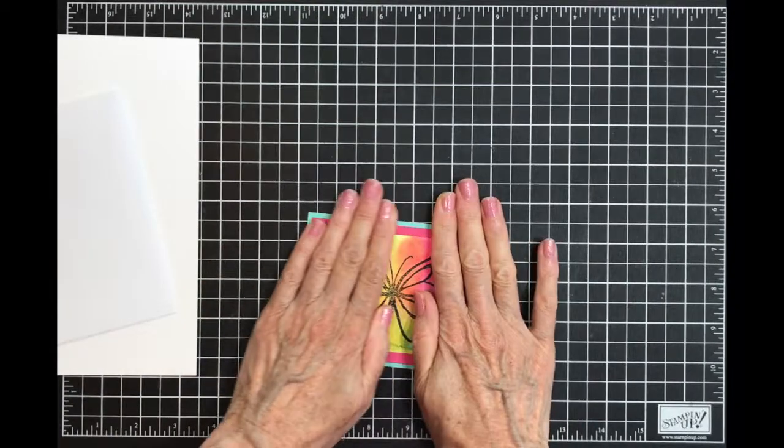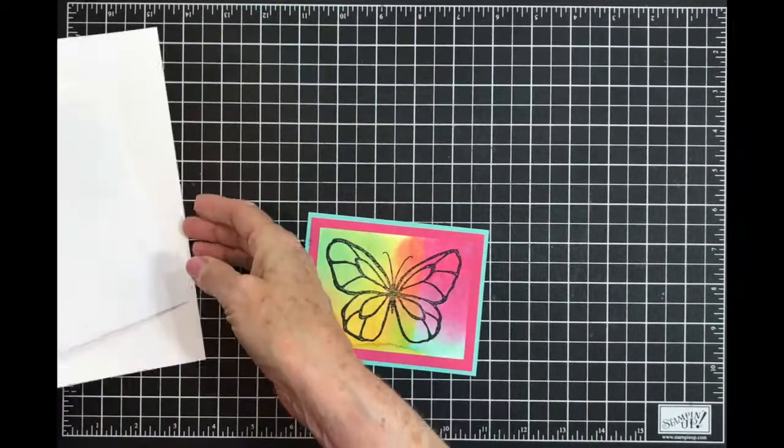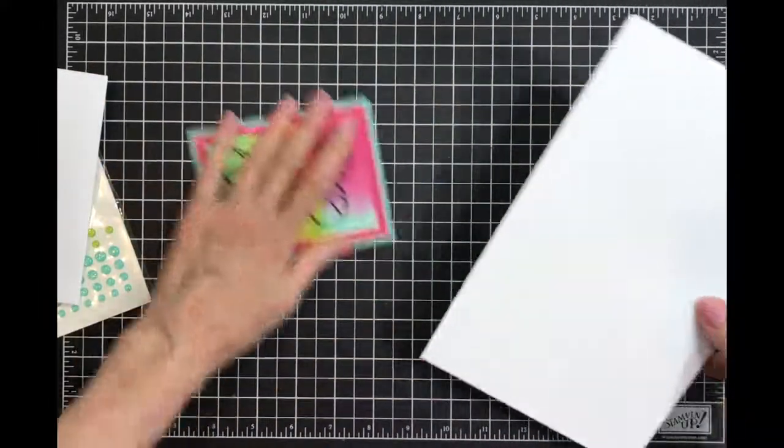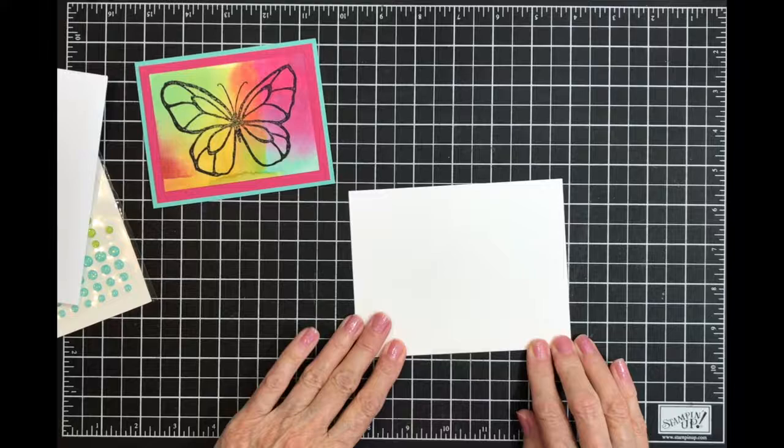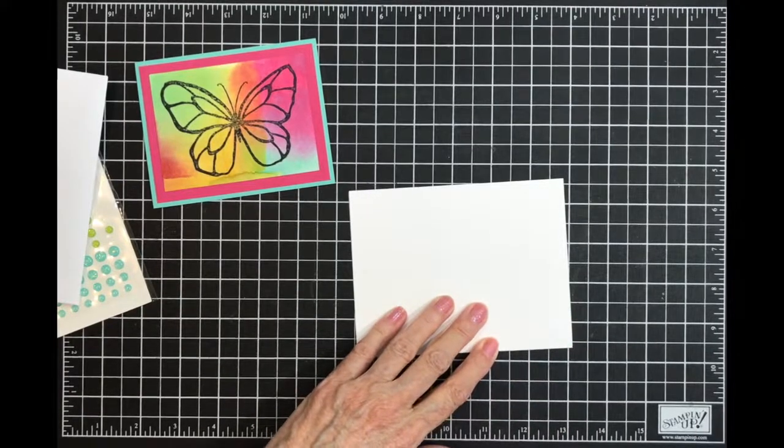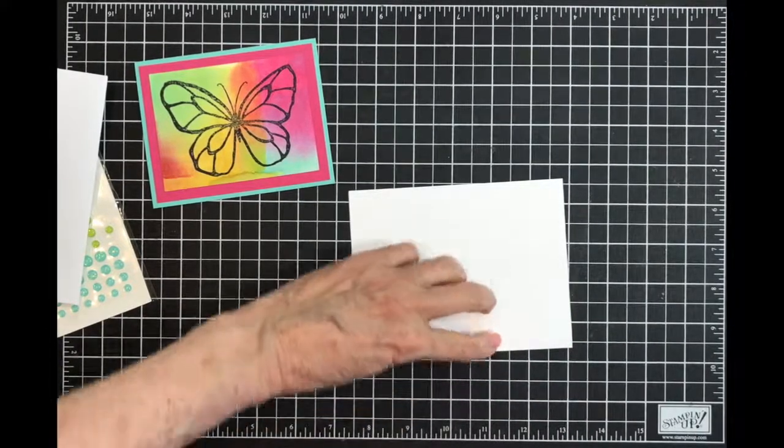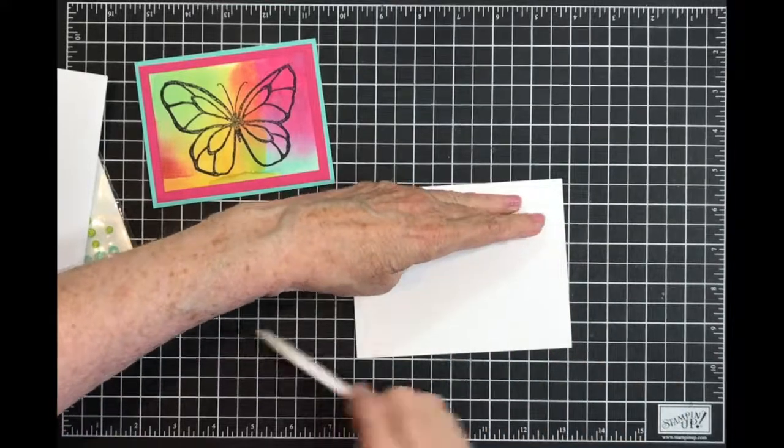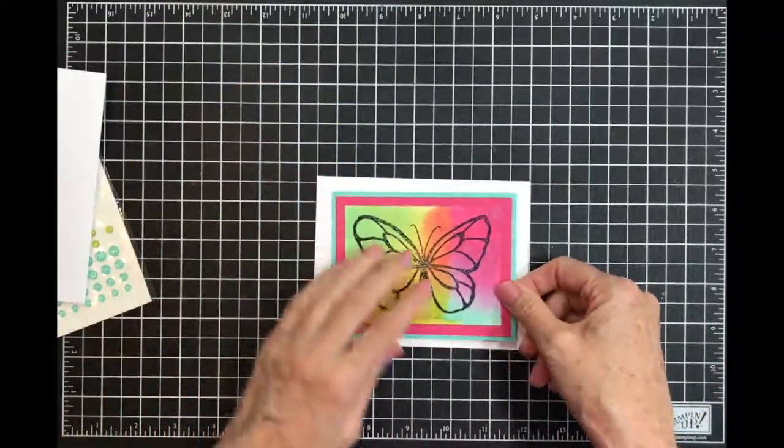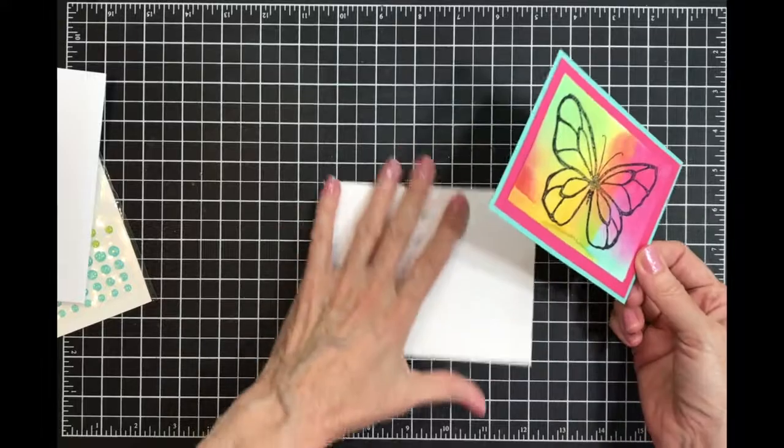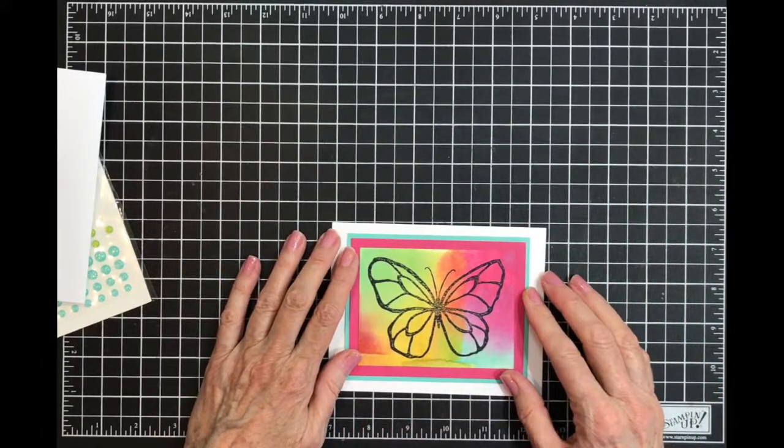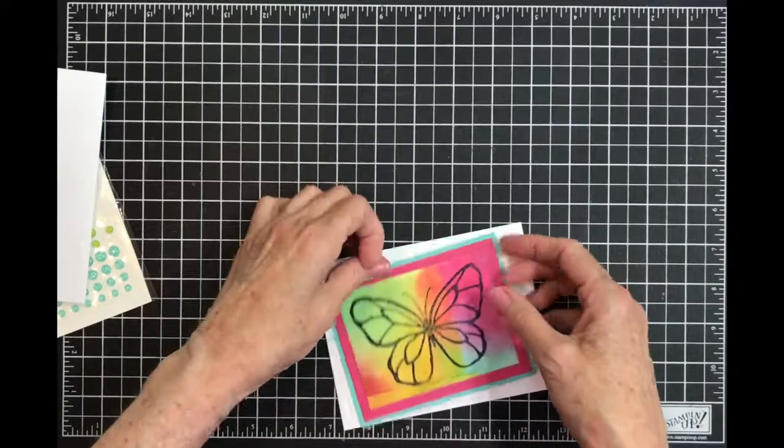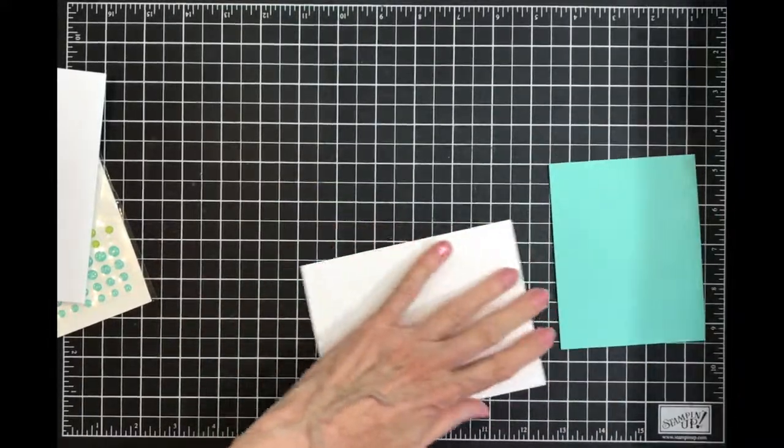And then this is going to go on our card base. This is a simple card, it's not an elaborate card. If you want ribbon you can add ribbon. I'm going to keep it flat because if I decide I want to add a ribbon when I take the picture, I can.